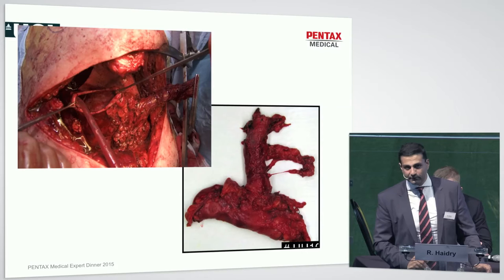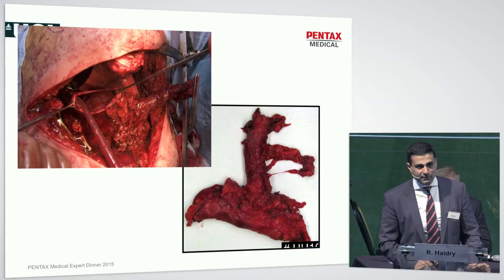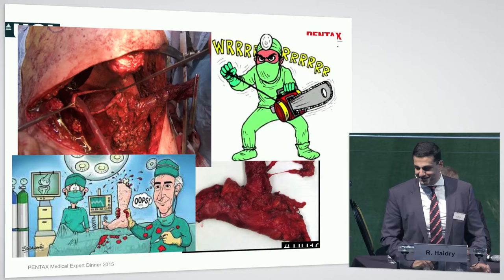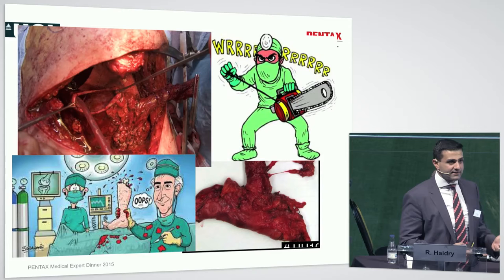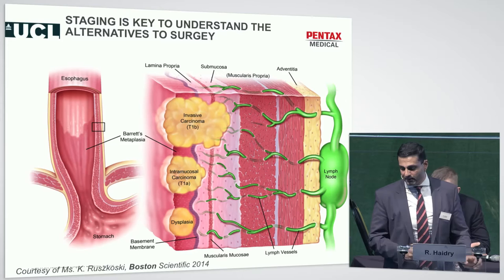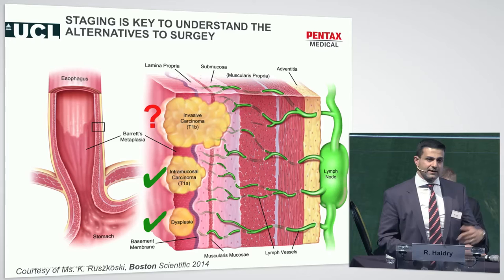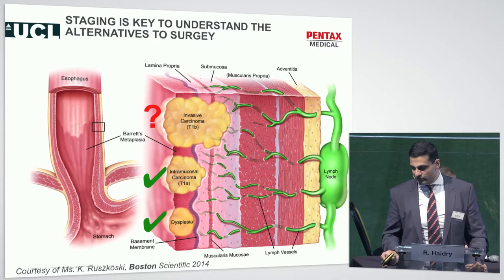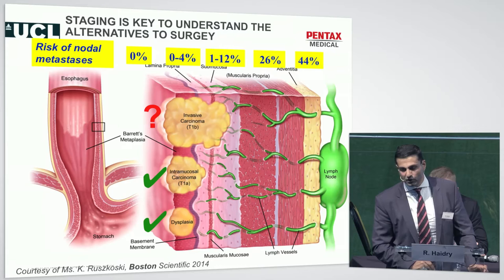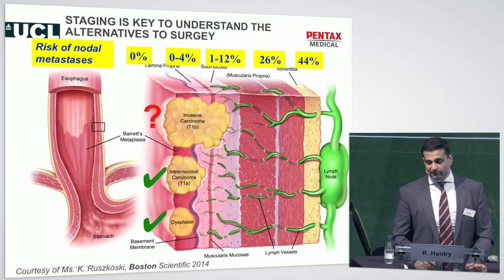For those from a surgical background, this will be appealing, but patients should not be having esophagectomy. We now have the tips and tricks to find early neoplasia, and we need to understand why: patients with mucosal neoplasia have a risk of lymph node dissemination of less than 2-3%. But as soon as there is deeper disease, surgery or chemoradiotherapy is the intervention of choice. Large-volume surgical and EMR series confirm that nodal metastases risk is very low in mucosal neoplasia — so if we can find it, we can treat it.